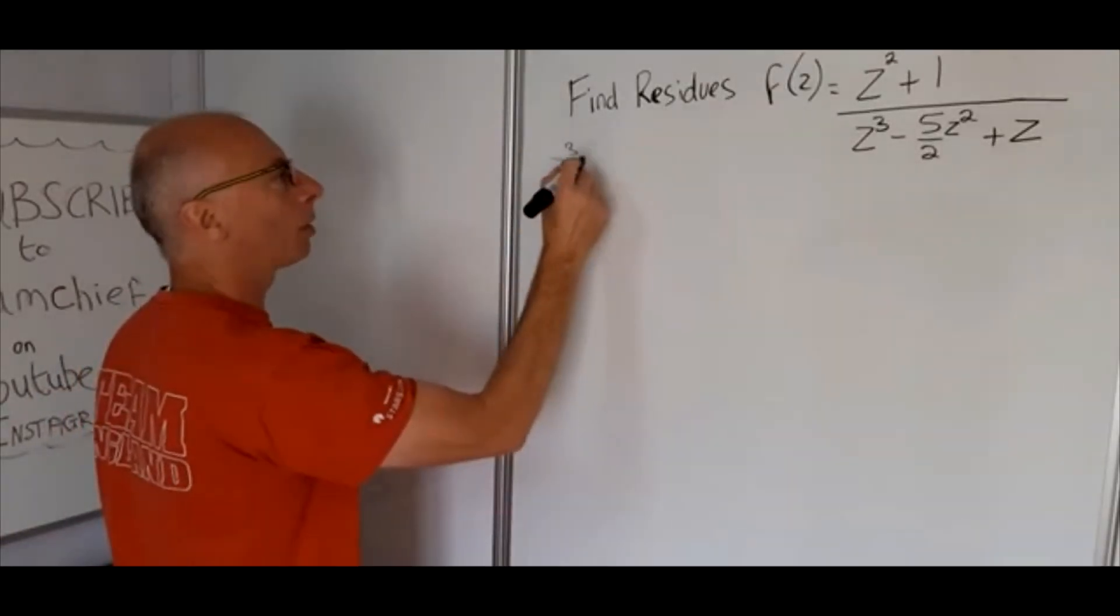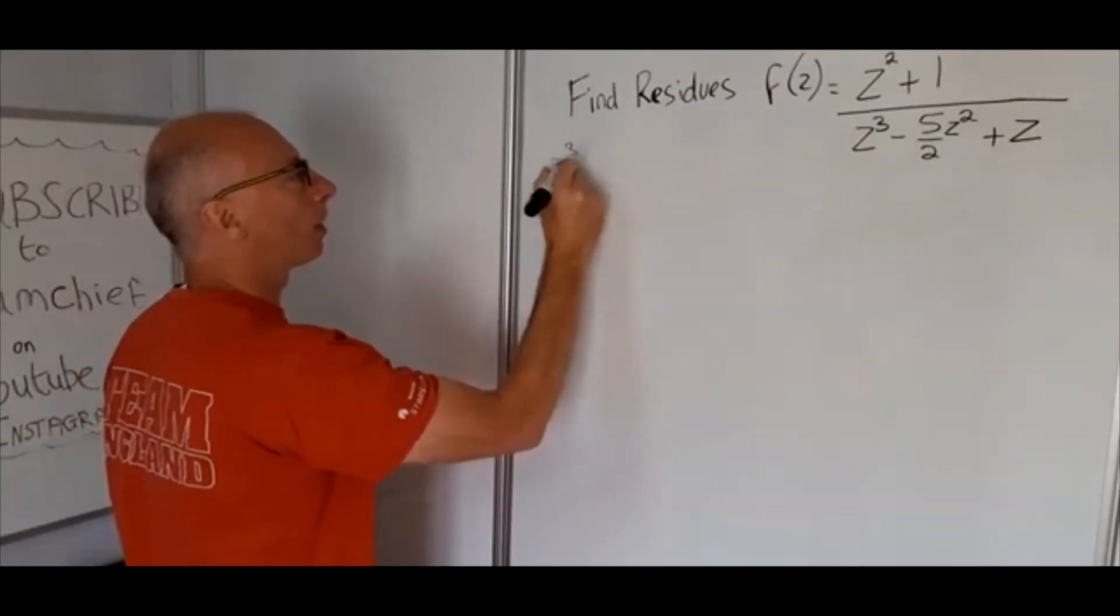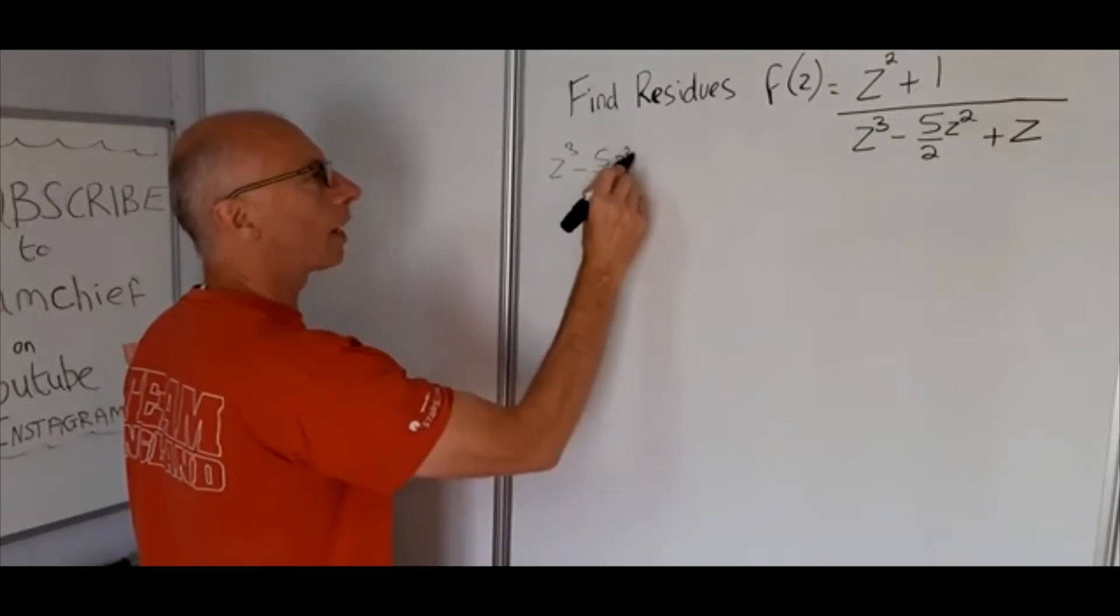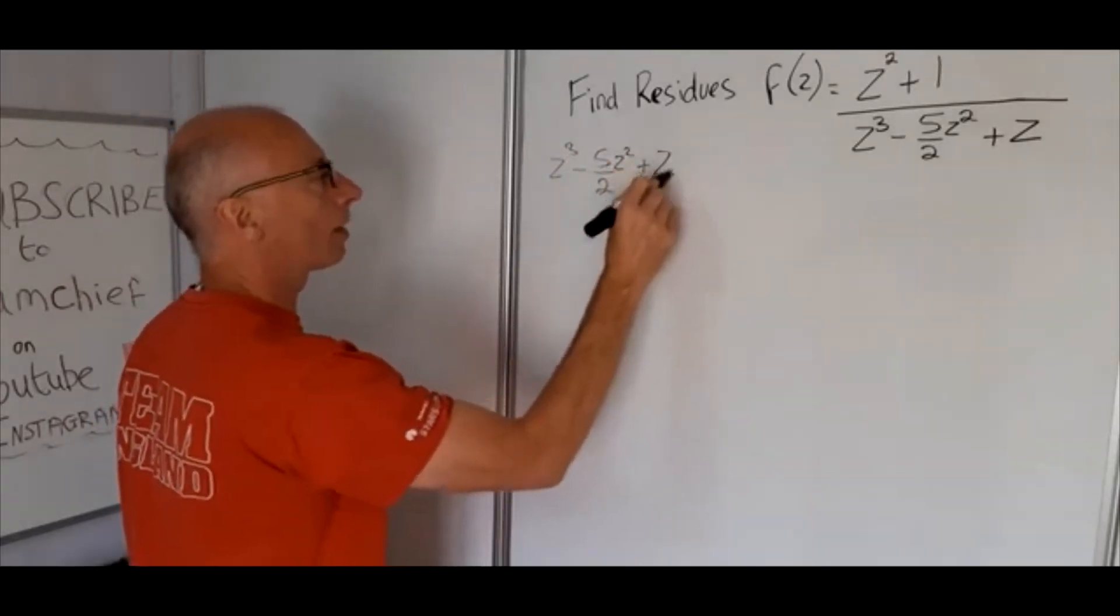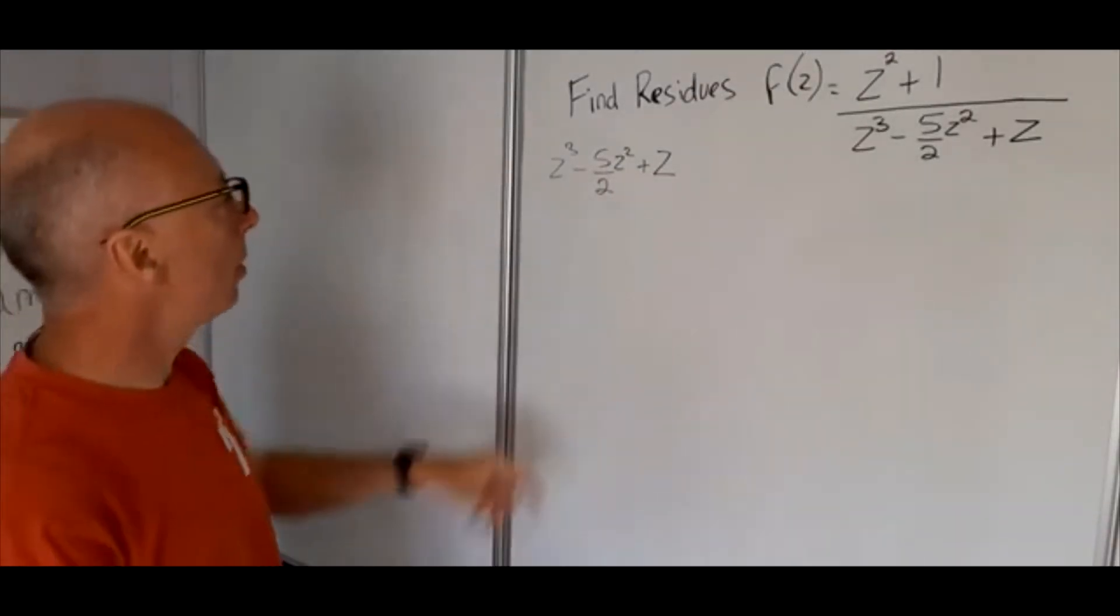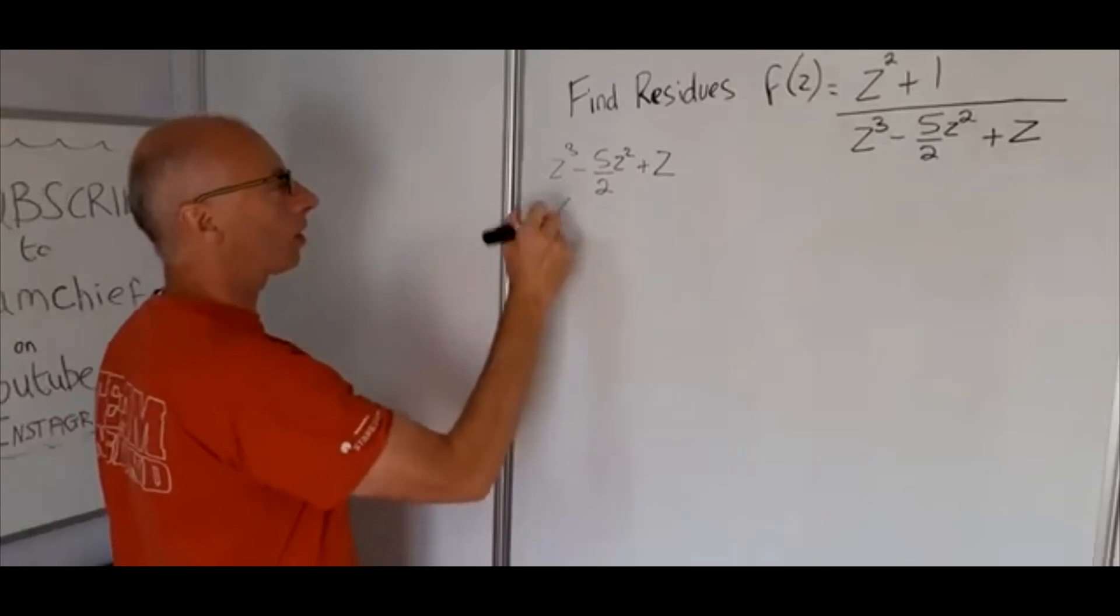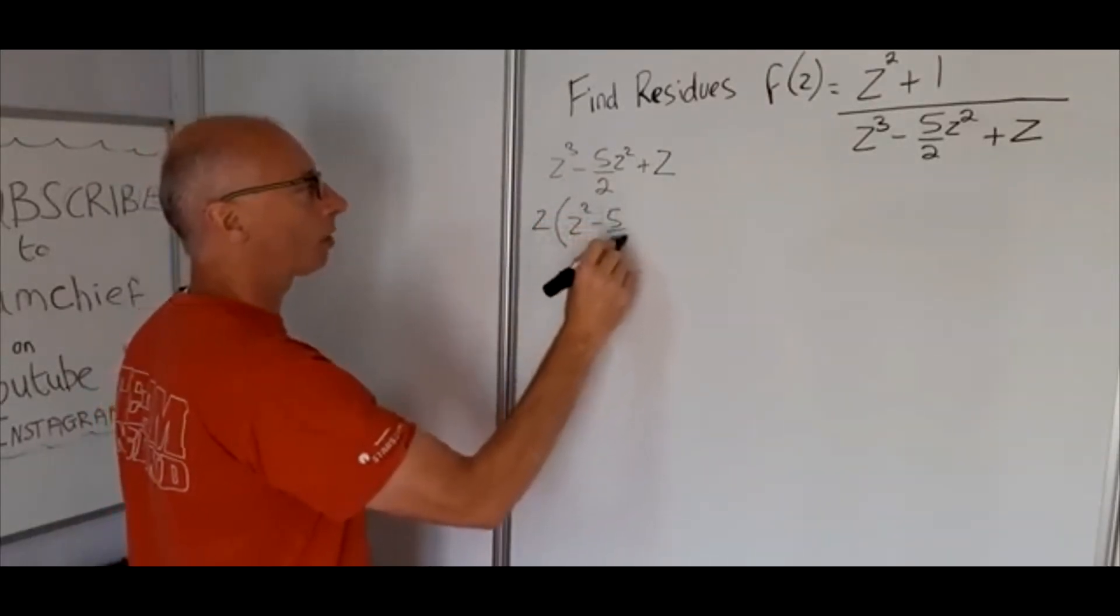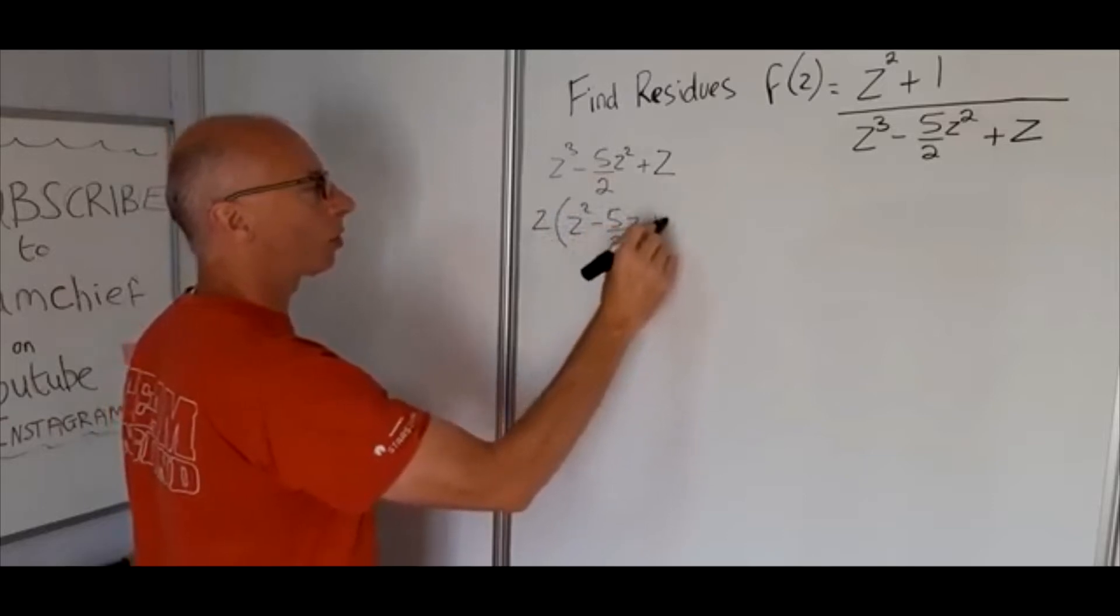So z cubed minus 5 over 2 z squared plus z. Okay, so if you factor out the z first and take a z out of each term, we get z squared minus 5 over 2 z plus 1.